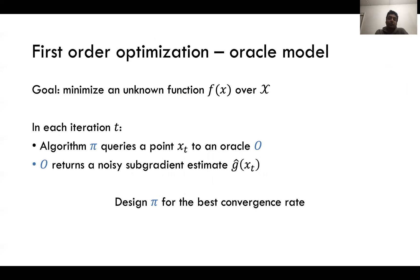The framework in which we are going to study the problem was introduced by Nemirovsky and Yudin, the oracle model in which our goal is to minimize an unknown function f over some domain calligraphic x. In each iteration, the algorithm π is going to query a point x_t to this gradient access oracle and the oracle is going to return a noisy subgradient estimate ĝ of x_t and the goal is to design π for the best convergence rate.